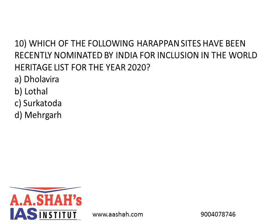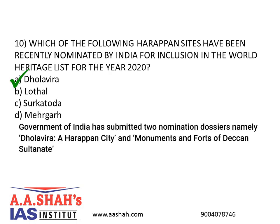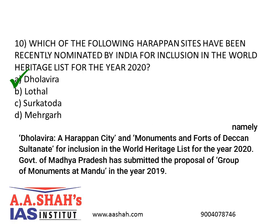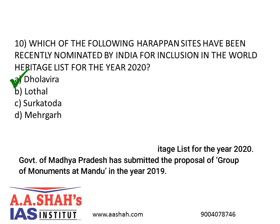10. Which of the following Harappan sites has been recently nominated by India for inclusion in the World Heritage List for the year 2020? A. Dholavira. B. Lothal. C. Rakhigarhi. D. Mehrgarh. Answer: A. The Government of India has submitted two nomination dossiers — namely Dholavira, a Harappan city, and Monuments and Forts of Deccan Sultanate — for inclusion in the World Heritage List for the year 2020. The Government of Madhya Pradesh submitted the proposal of Group of Monuments at Mandu in the year 2019.